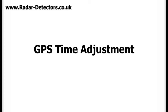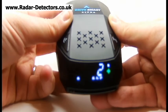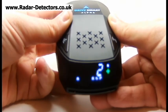GPS time adjustment — this allows you to adjust plus or minus GMT on the on-screen display time. This is to allow for British Summer Time and use around the world.